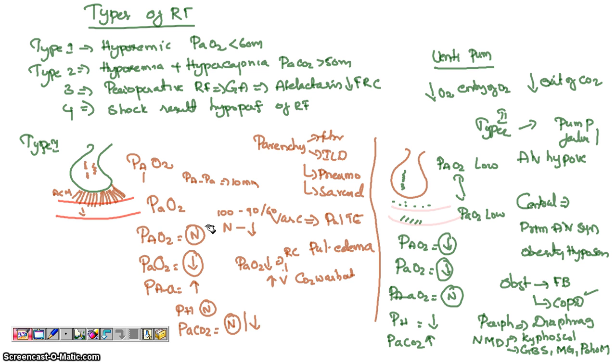What you need to remember is these ABG parameters. Here, the PAO2 is normal, in artery it decreases, the gradient increases, pH normal, and PaCO2 normal to decreased. This is type 1. In type 2, decreased PAO2, both parameters decrease, but the gradient remains normal, pH decreases, PaCO2 increases. This is type 2. So thank you friends.